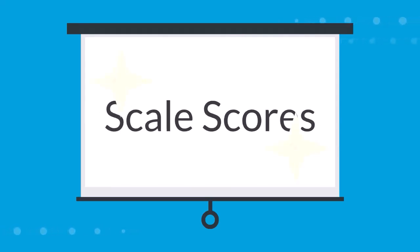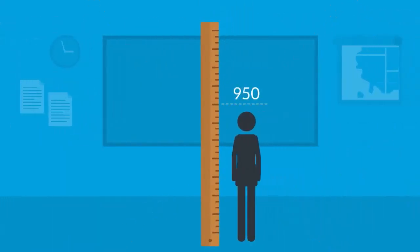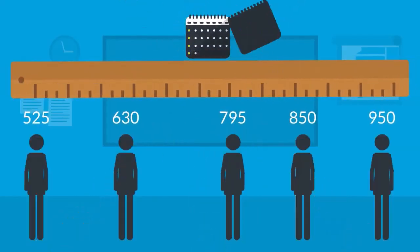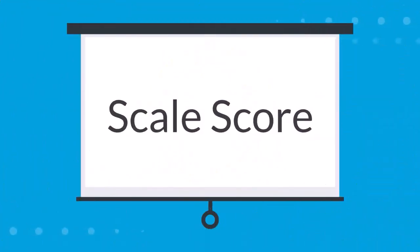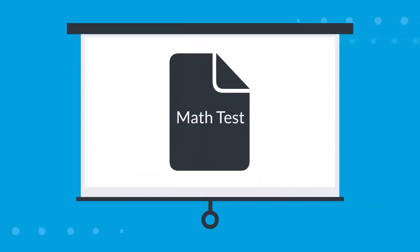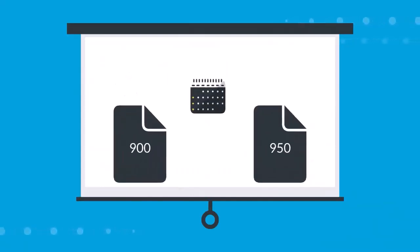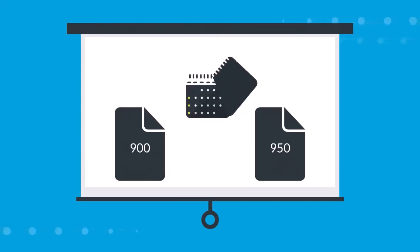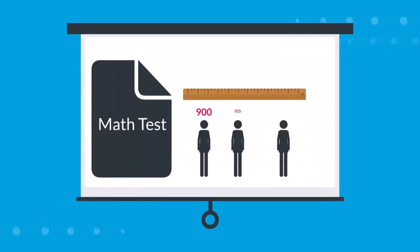That's where scale scores come into play. Scale scores are like holding a yardstick up to a student to measure ability, and then being able to use that same yardstick year after year with all of your students. With a scale score, which is typically a three or four digit number, you can compare performance from the same test given at different times, both within a school year and across grade levels to show student growth.